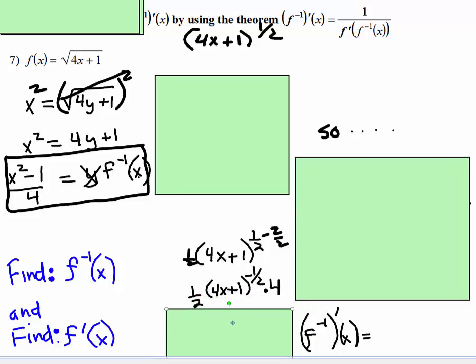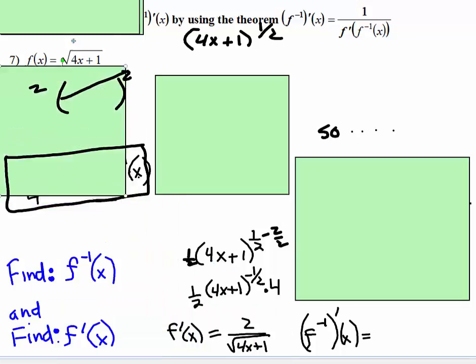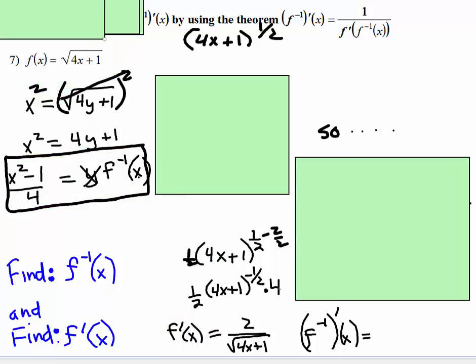Yep, we brought the 1 half down, then we subtracted 2 over 2, or subtracted 1 from the exponent, and then we multiply that whole thing by the derivative of the inside, and that simplifies to this. 4 times 1 half is 2. This negative exponent brings this whole thing to the denominator, and something to the 1 half just means the square root.